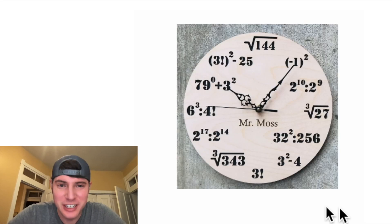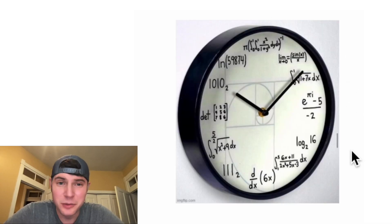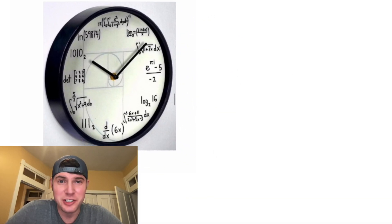Hey guys, sometimes you see these clocks for sale that give the hours as mathematical expressions. Most of them are pretty straightforward, like six times two is equal to 12, square root of four is equal to two, but this one right here is the craziest one I've ever seen. I thought it'd be fun to do a high-level explanation of these.